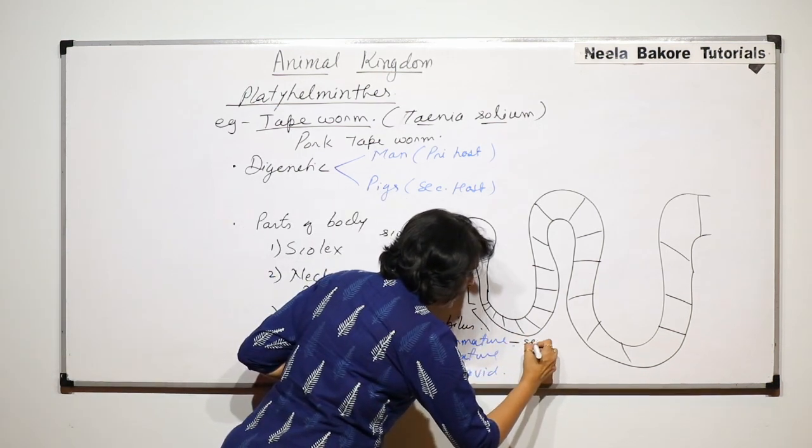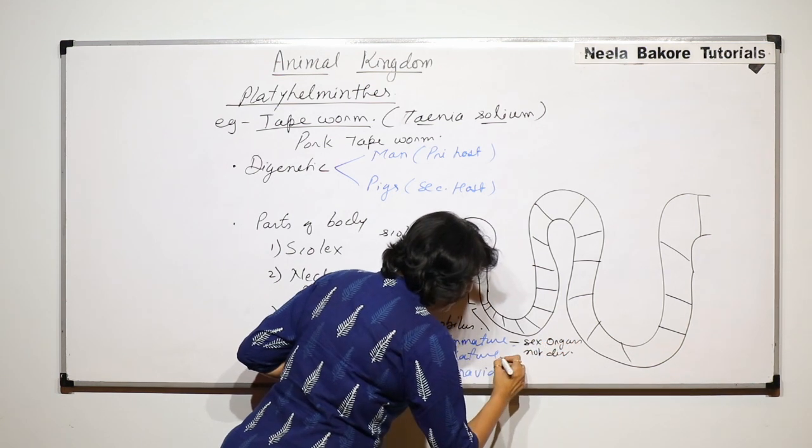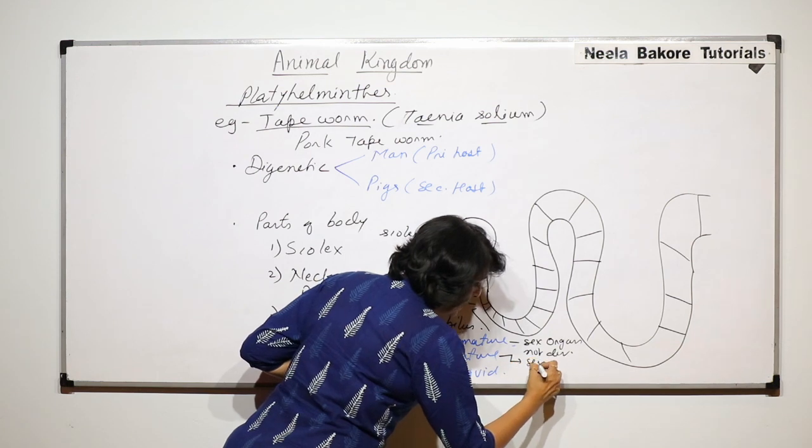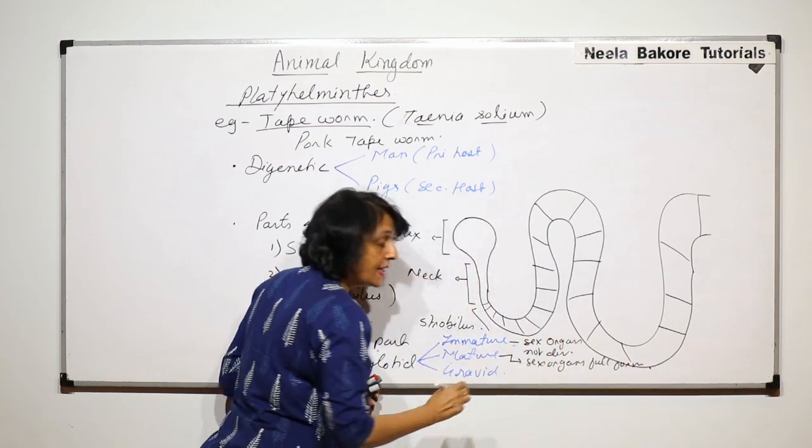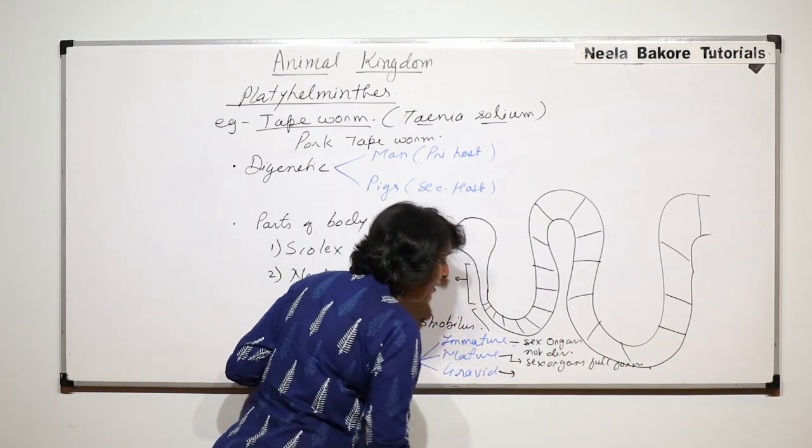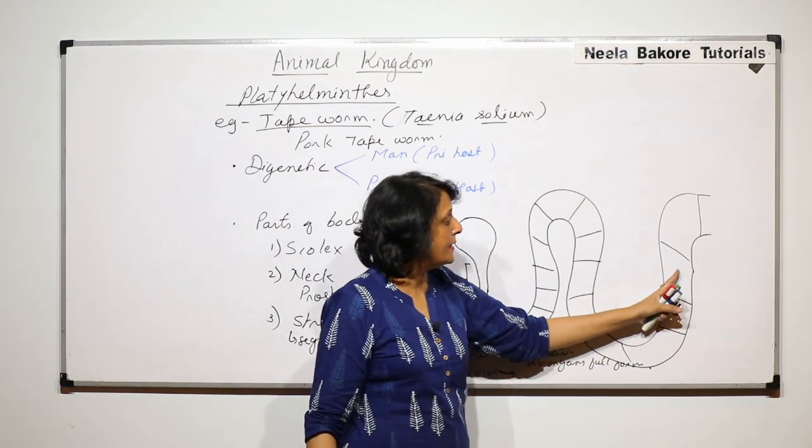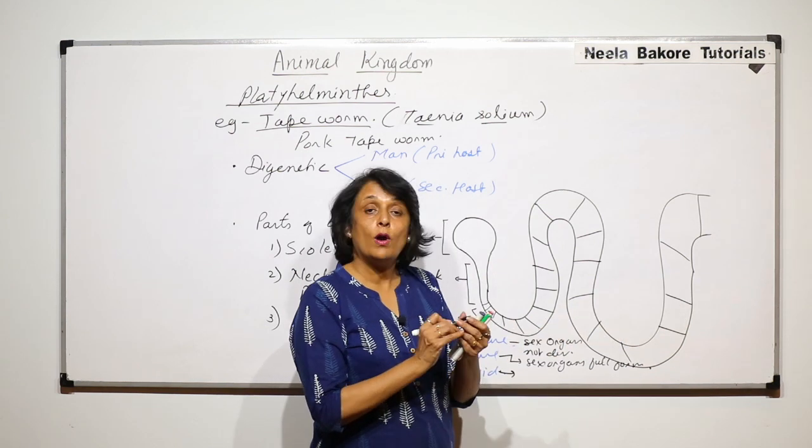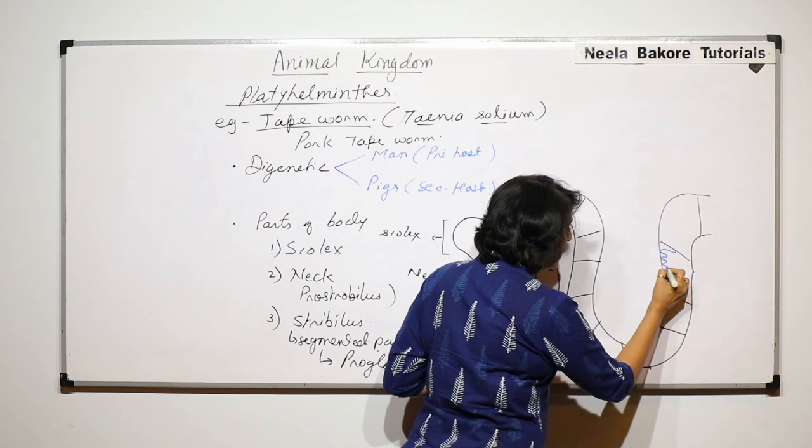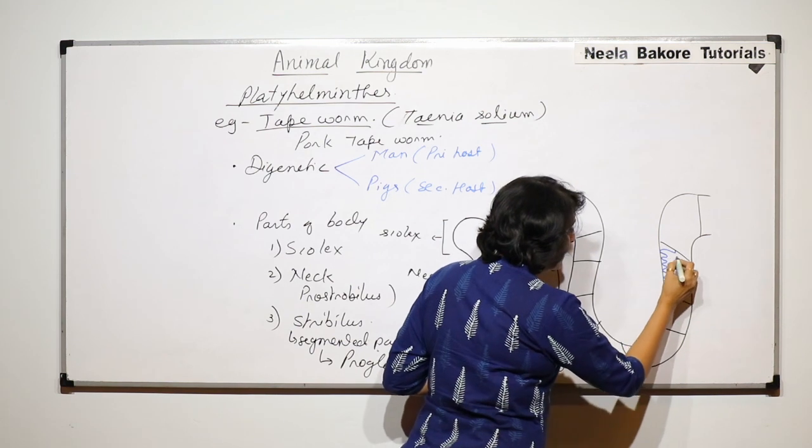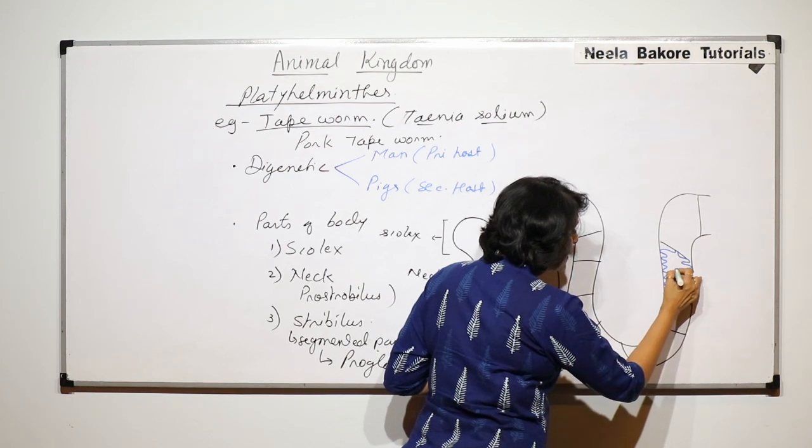Immature means sex organs not developed. Mature means sex organs fully formed and here is reproduction taking place. And gravid proglotid has only uterus. So if I say that these last ones are gravid proglotid, what we will see in this gravid proglotid is the uterus which is highly folded like this, and this is completely filled with only cysts.